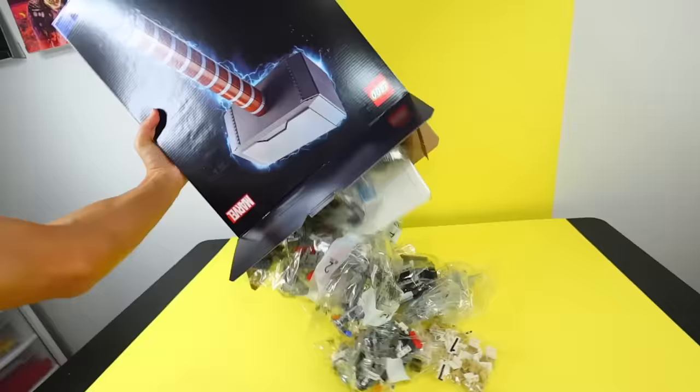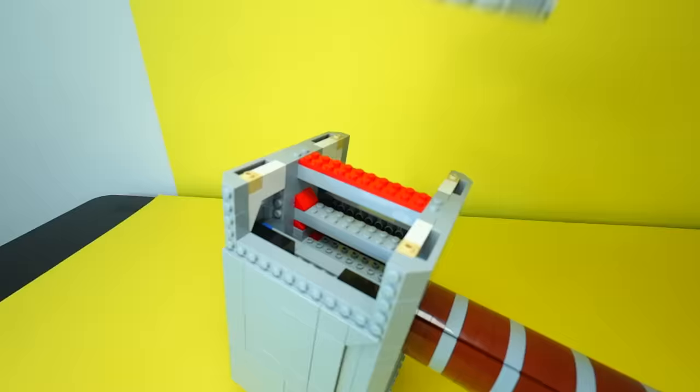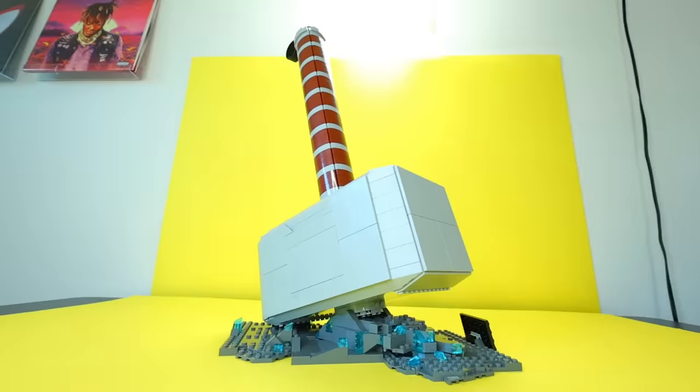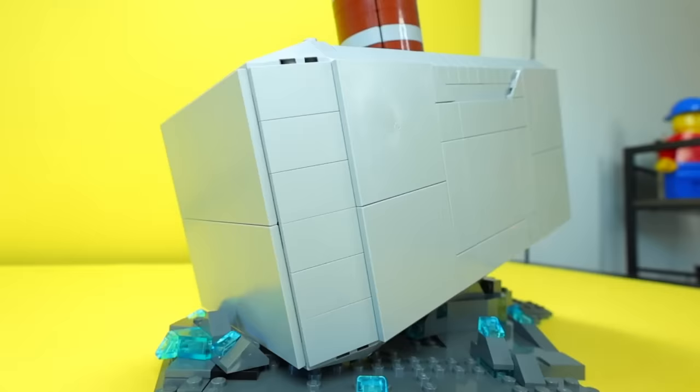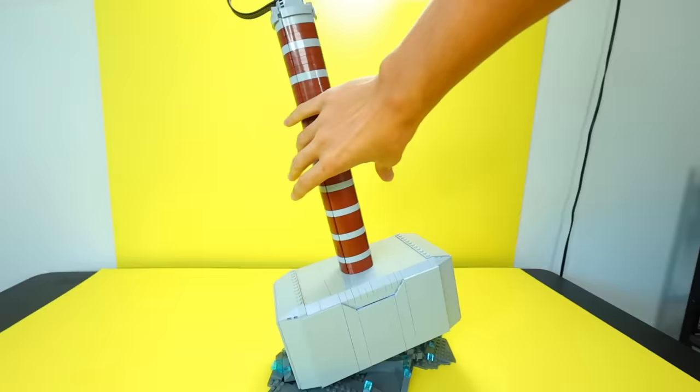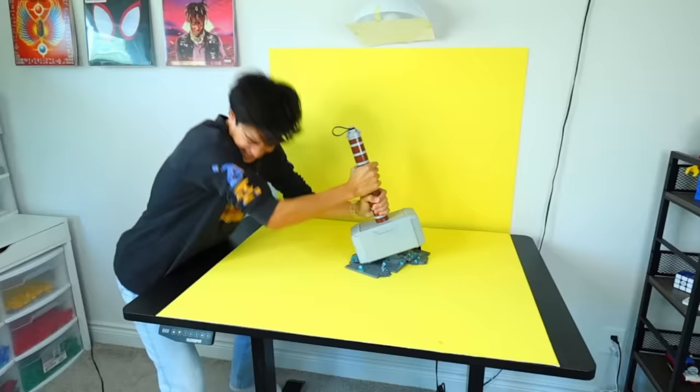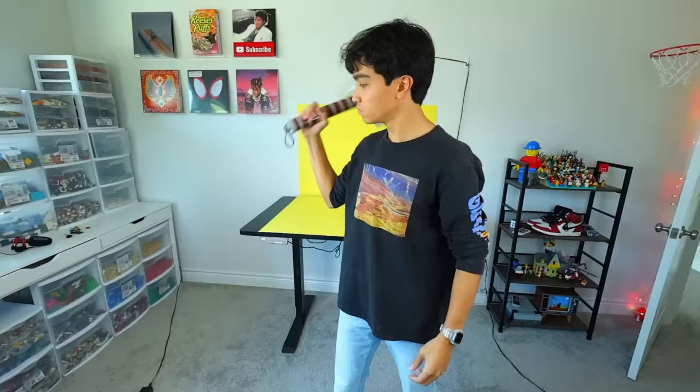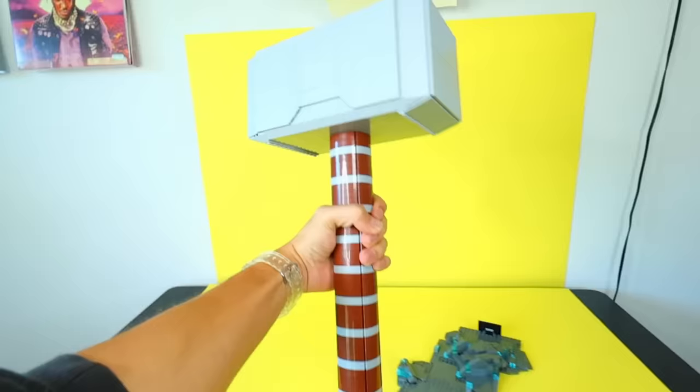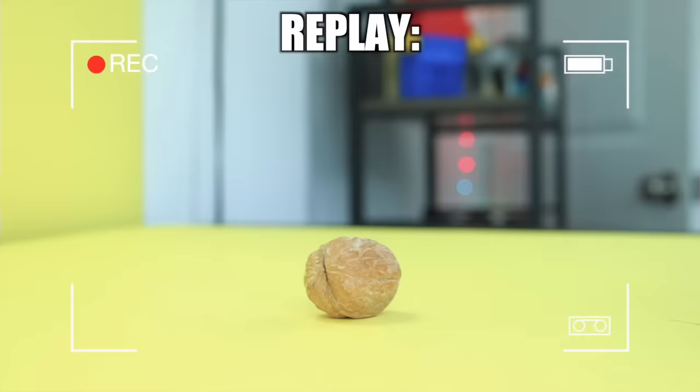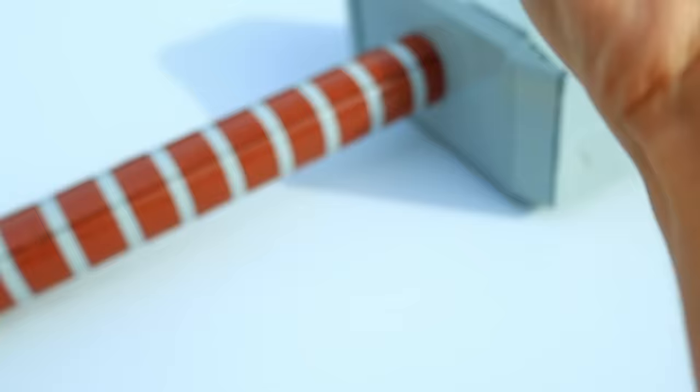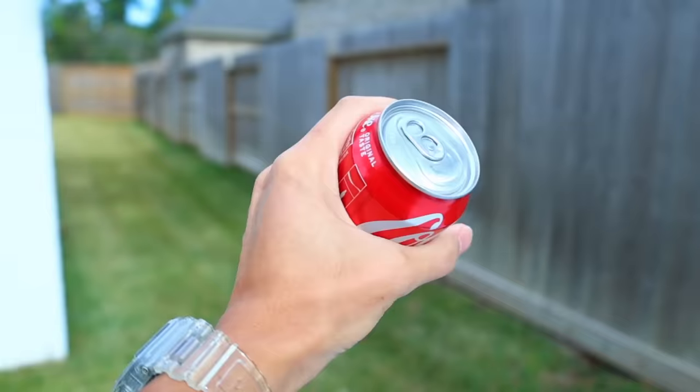The second LEGO set I bought is another superhero weapon, but this time it's a life-size replica of Thor's hammer. It costed $100 and has almost 1,000 pieces. But legends say in order to pick it up, you have to be worthy. But we're gonna put it to the test and see how powerful it is. So let's start by smashing some nuts. That honestly was no problem. So let's step it up a notch and see if we can destroy a soda can.